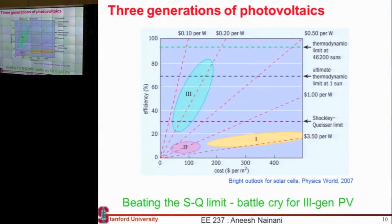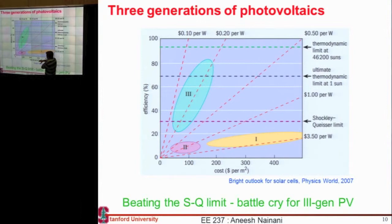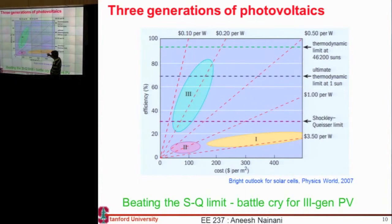This has now become a battle cry for people doing research in PV. Earlier it was for satellites, but now it plays into the dollar-per-watt game. This chart plots efficiency versus cost. If you have higher efficiency, even charging more dollars per meter square, you can still be on the same dollar-per-watt curve. Most crystalline silicon — first generation technology — tended to be on this curve, raising efficiency but at higher cost, around $2 per watt.